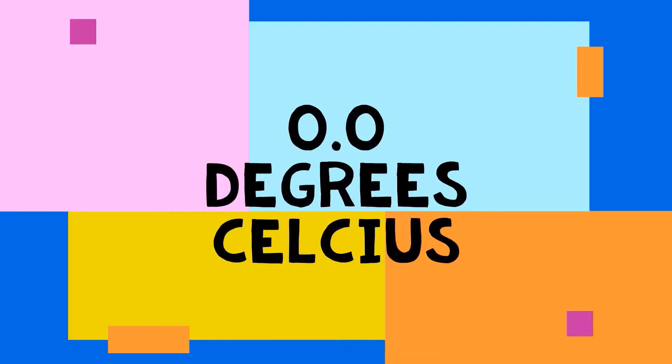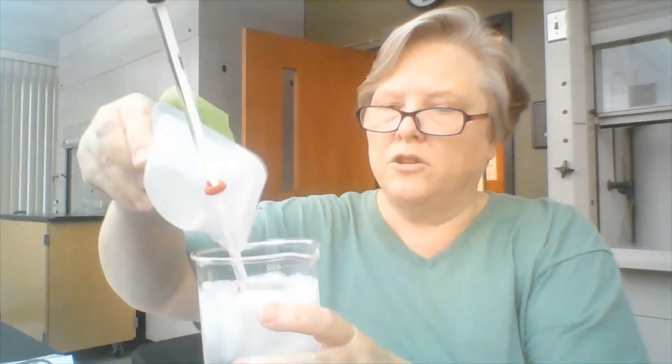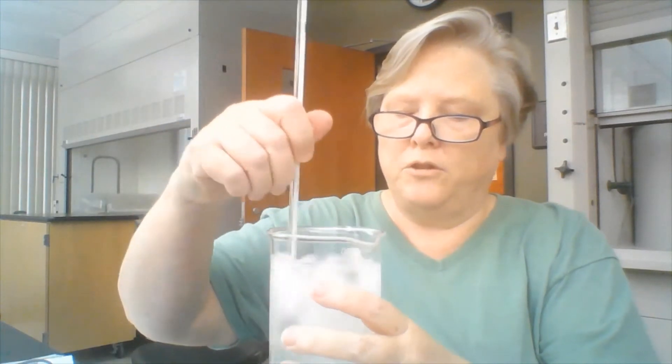Now we're going to add a little bit of salt to the water, and we're going to add five grams of sodium chloride to it. Here's my five grams of sodium chloride in my weigh boat, and I'm going to add that to my beaker full of ice water, and stir until it's dissolved, and then we'll read the temperature of that.